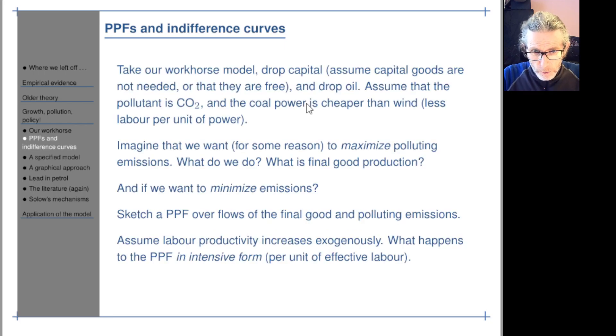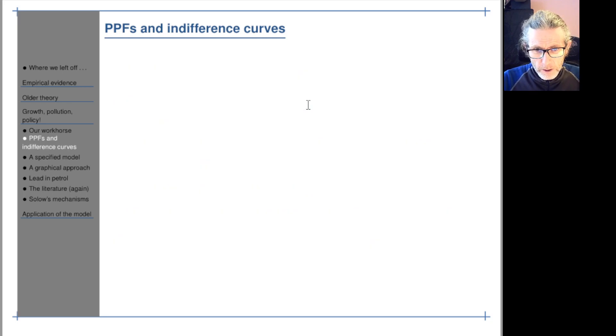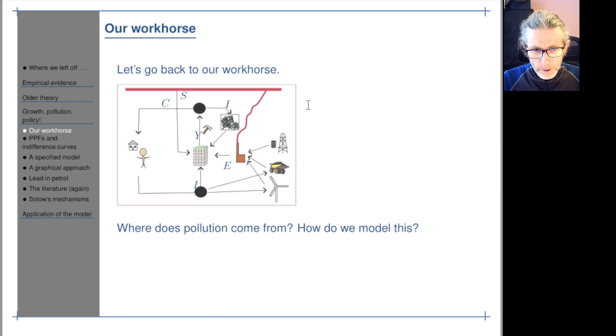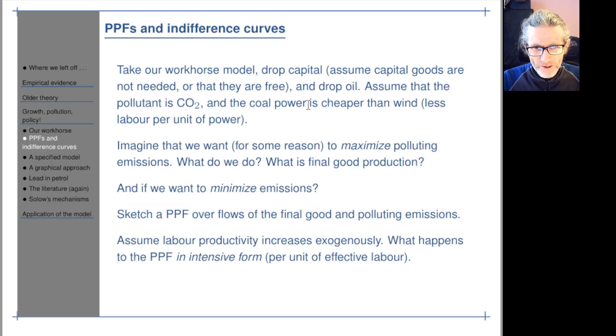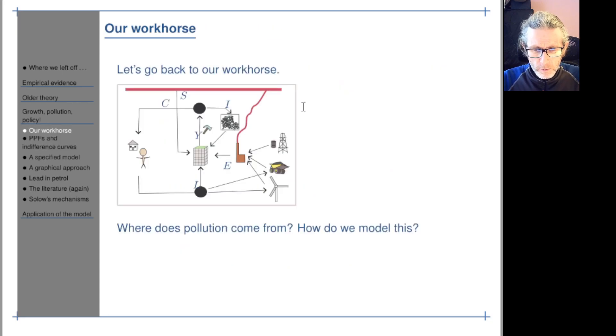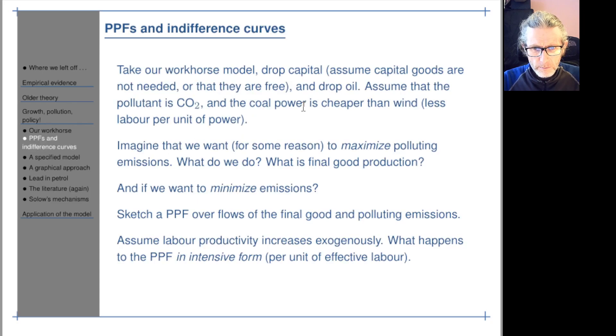Let's take our workhorse model, drop capital. Actually, if we go back to the picture, we did have capital in that one. Drop capital and drop the oil. So what have we got? We've still got the coal and the wind. Assume that the pollutant is carbon dioxide and the coal power is cheaper than wind in laissez-faire, without any policy.